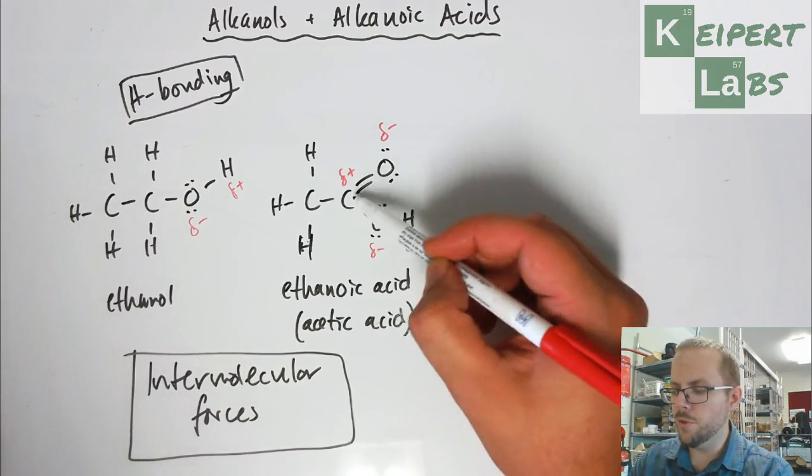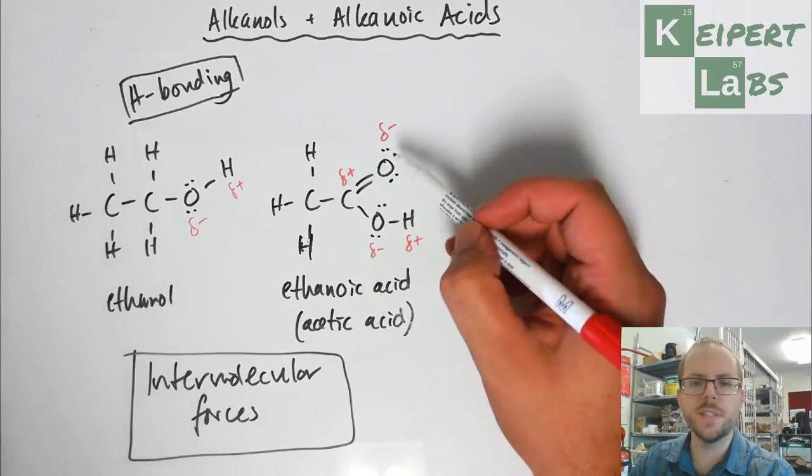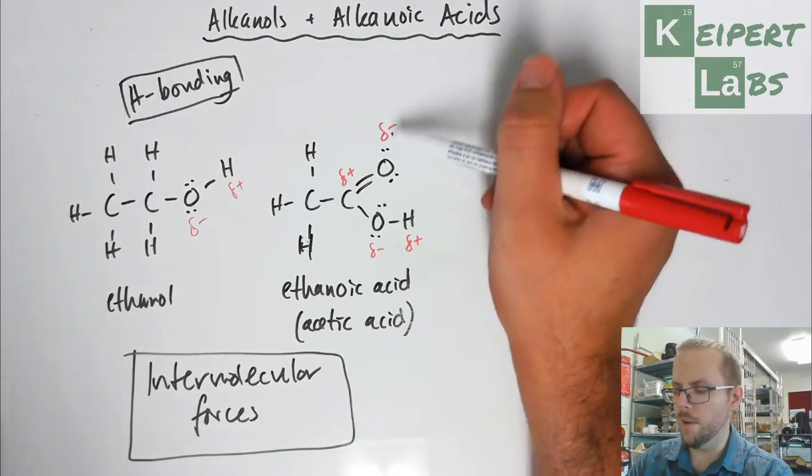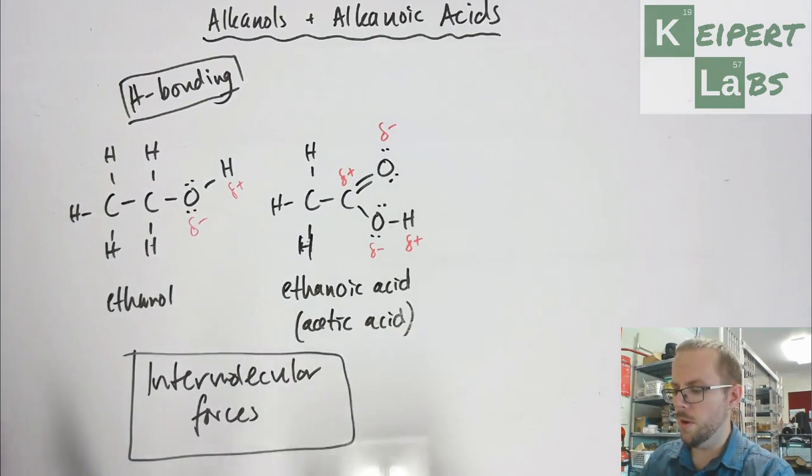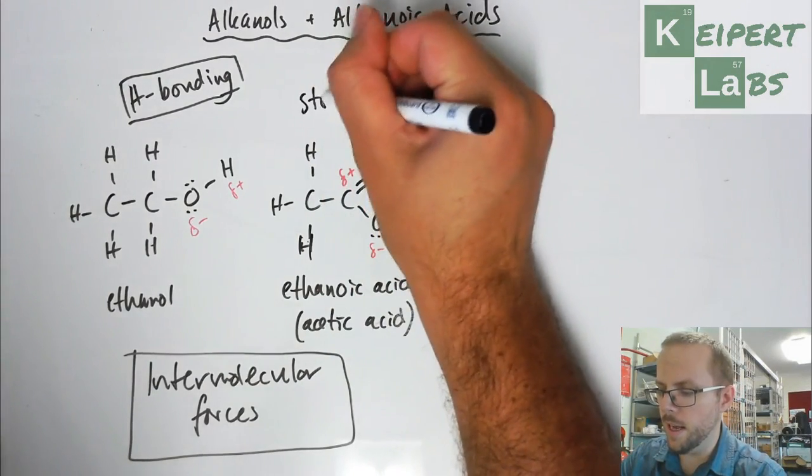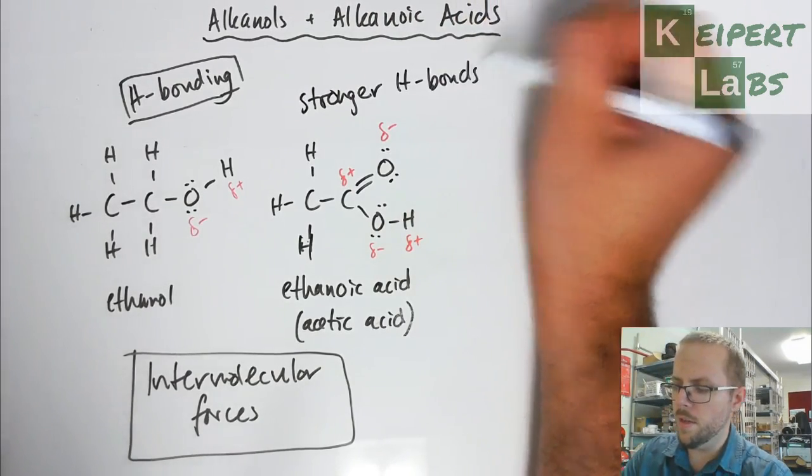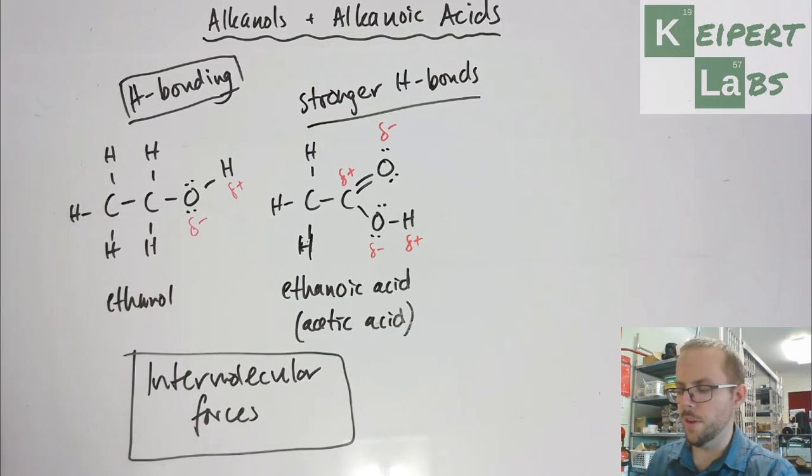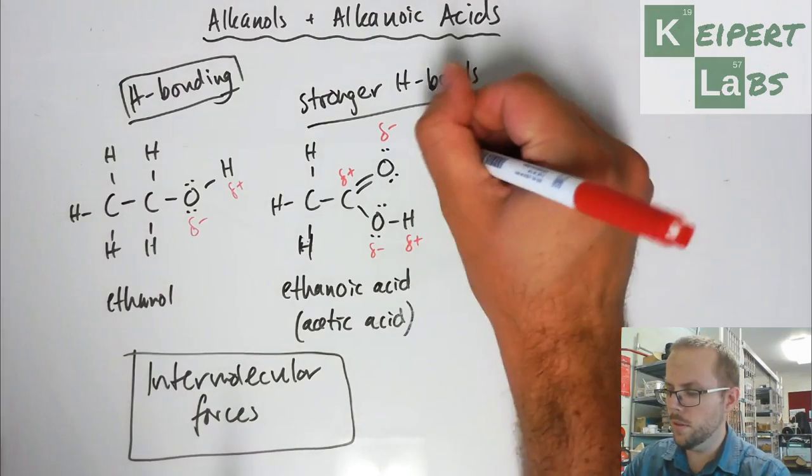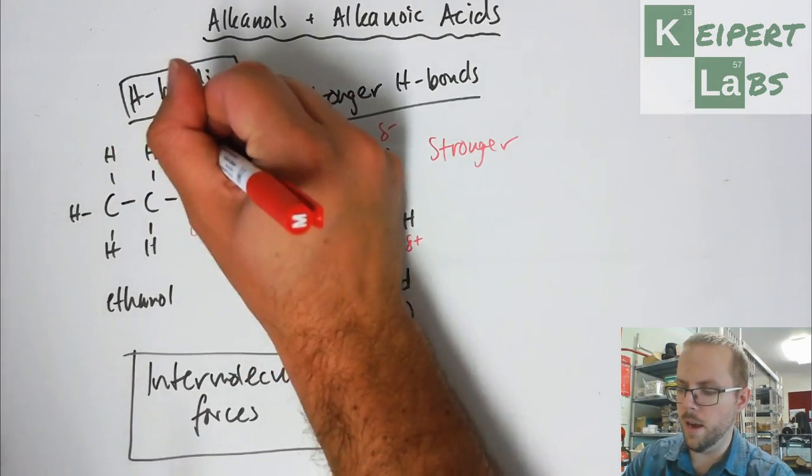But when you have two bonds here, a double bond, there's more electrons that can be pulled so the difference is magnified. So you have a polar bond here and a polar bond here. This means that in alkanoic acids you get stronger hydrogen bonds than you do in an alkanol. The intermolecular forces are stronger in alkanoic acids than they are in alkanols.